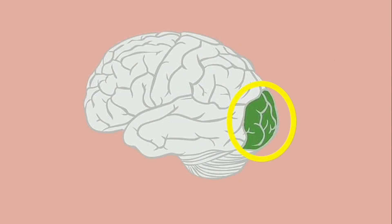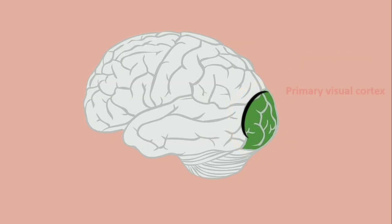The occipital lobe is situated in the back of the brain behind the parieto-occipital sulcus. Mainly, it contains the primary visual cortex and the visual association cortex.